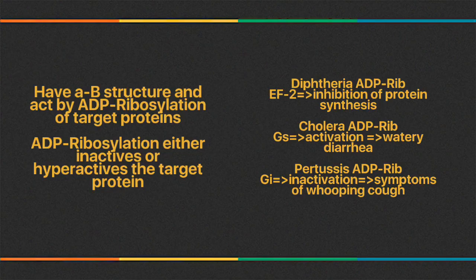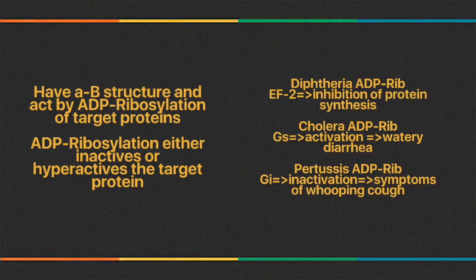Cholera ADP ribosylates the Gs protein, which activates the target protein, leading to increased cAMP concentration and watery diarrhea. Pertussis ADP ribosylates Gi, which inactivates the target protein, also leading to increased cAMP concentration — and that leads to symptoms of whooping cough.